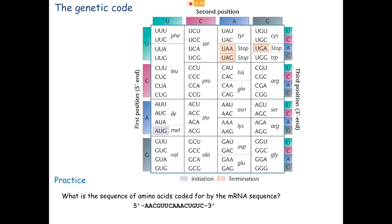Changing the third nucleotide often doesn't affect the amino acid it codes for. For example, proline: second row, second column, where the second base is C — all four permutations of the third base still code for proline. This is degeneracy or redundancy in the code. Most of the 16 blocks code for only one amino acid: serine, proline, threonine, alanine. It seems like only the first two bases really matter for a lot of these amino acids.